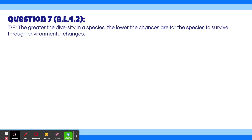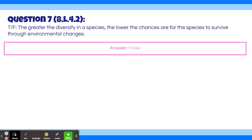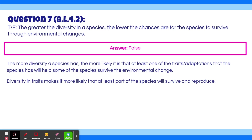Question 7. True or false: the greater the diversity in a species, the lower the chances are for the species to survive through environmental changes? The answer is false. The more diversity a species has, the more likely it is that at least one of the traits or adaptations will help some of the species survive the environmental change. Going back to the peppered moth example, some moths changed color and became dark gray — this phenotypic variation made the species more diverse. Because of this diversity, the dark peppered moths survived through the Industrial Revolution, so the species didn't go extinct. Diversity in traits makes it more likely that at least part of the species will survive and reproduce.